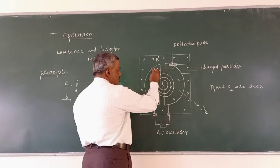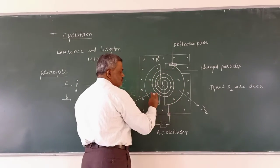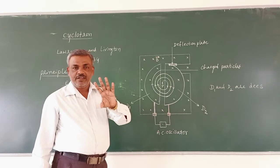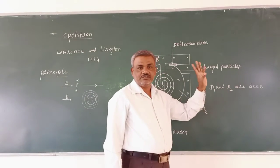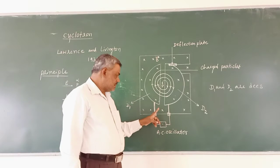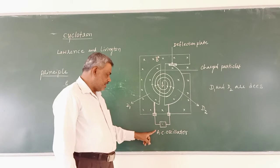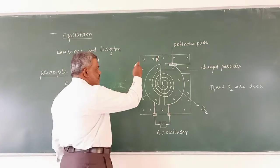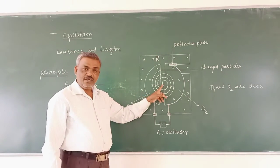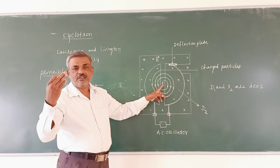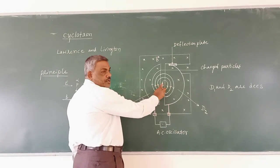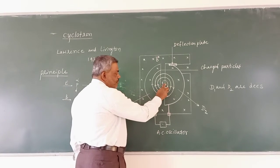The cyclotron consists of two semicircular hollow discs called D1 and D2 — two metal containers called Dees. These two Dees are connected to a high frequency oscillator. Cross symbols represent a uniform magnetic field directed into the page. P is the source releasing positively charged particles, located at the midpoint in the gap between the two metal containers.